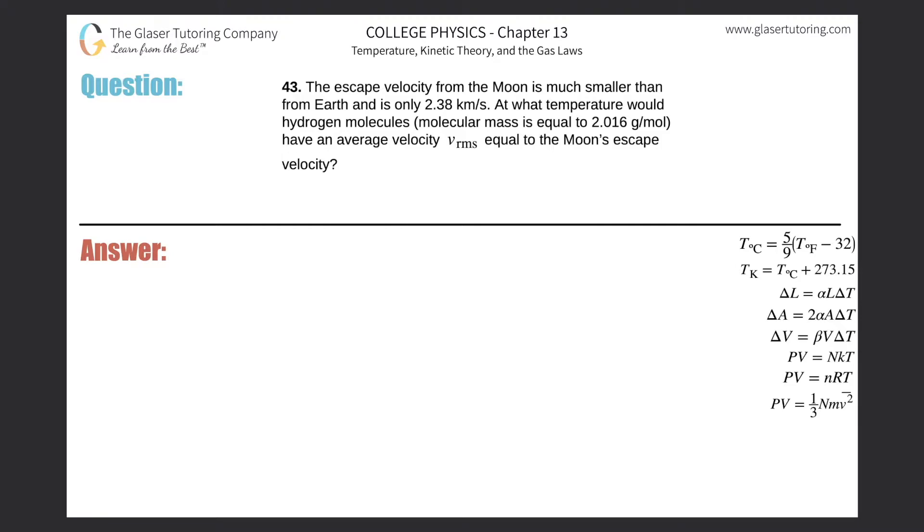Number 43: The escape velocity from the Moon is much smaller than from Earth and is only 2.38 kilometers per second. At what temperature would hydrogen molecules, which has a molecular mass of about 2 grams per mole, have an average velocity v_rms equal to the Moon's escape velocity?